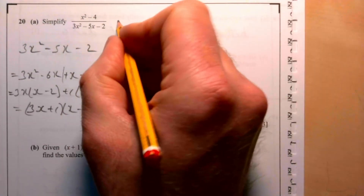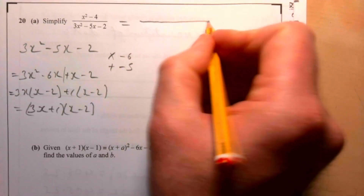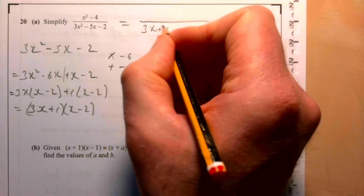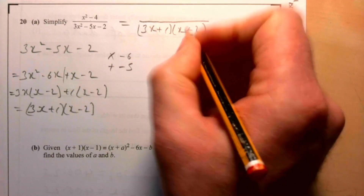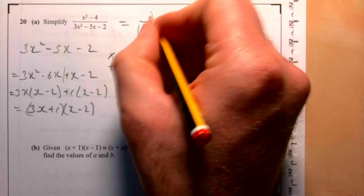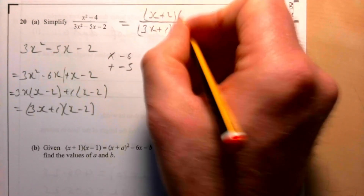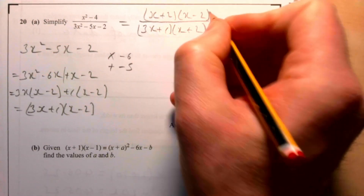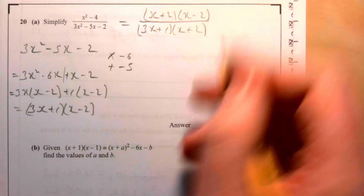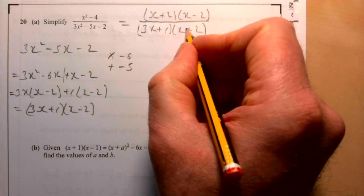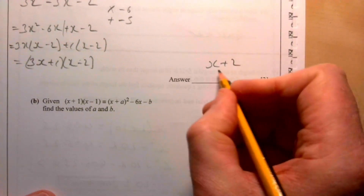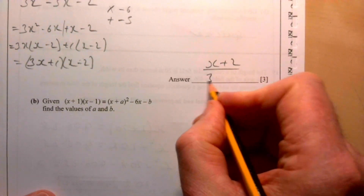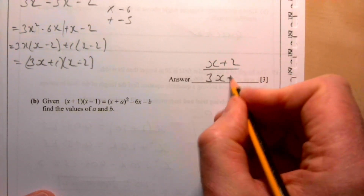Factorising the denominator: 3x(x minus 2) plus 1(x minus 2) gives (3x plus 1)(x minus 2). So the full expression becomes (x plus 2)(x minus 2) over (3x plus 1)(x minus 2). The (x minus 2) terms cancel, leaving (x plus 2) over (3x plus 1).